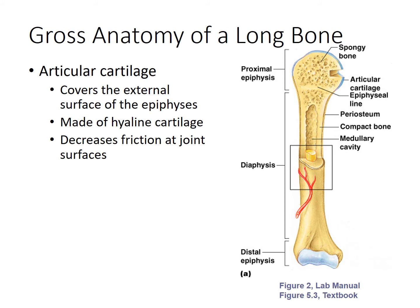On the outer surface of the epiphyses there is a layer called articular cartilage. It is labeled here and shown in blue, and notice there is also articular cartilage at the distal epiphysis. This articular cartilage is hyaline cartilage, and its function is to provide a low-friction surface at a joint to help protect the deeper bone tissue.